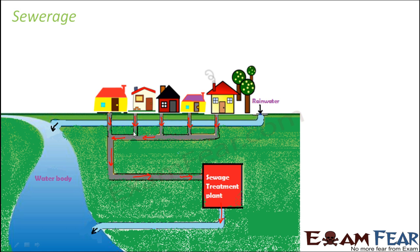This is how the transportation part is taken care of. Now, have you ever seen manholes on the roads in your locality? Every 50 to 60 meters you will see manholes. Sewers, receiving drains, and manholes are all part of the sewerage system. This entire sewerage infrastructure starts at individual houses and ends at the entry point to the sewage treatment plant.